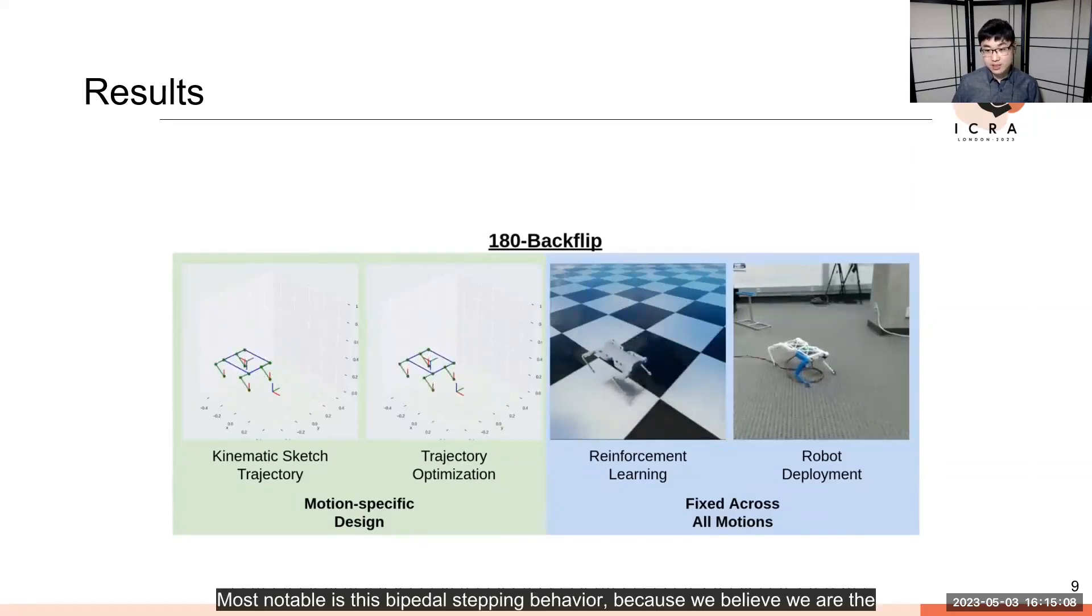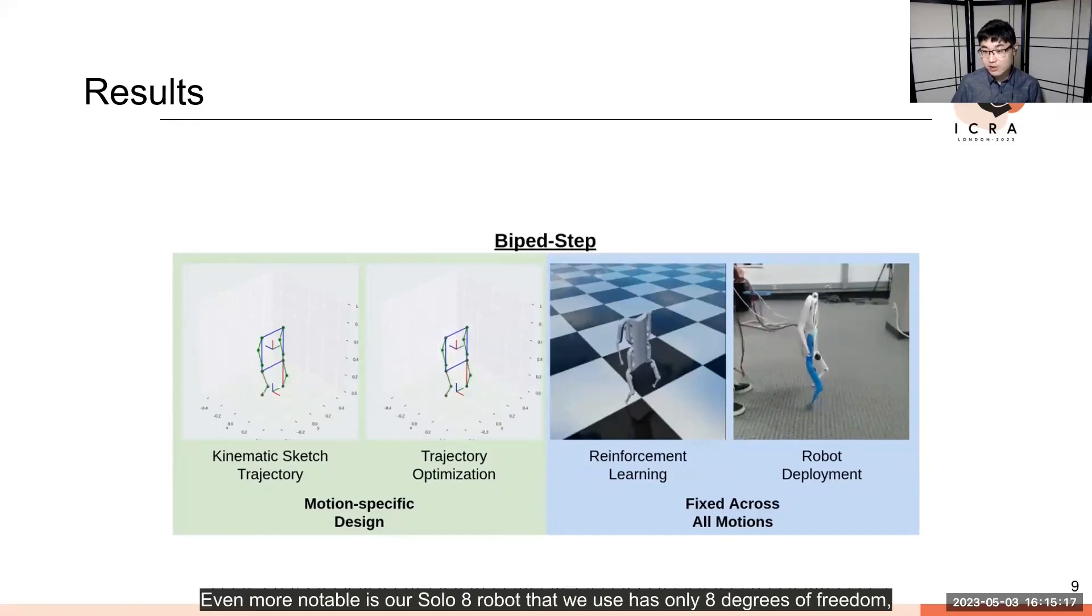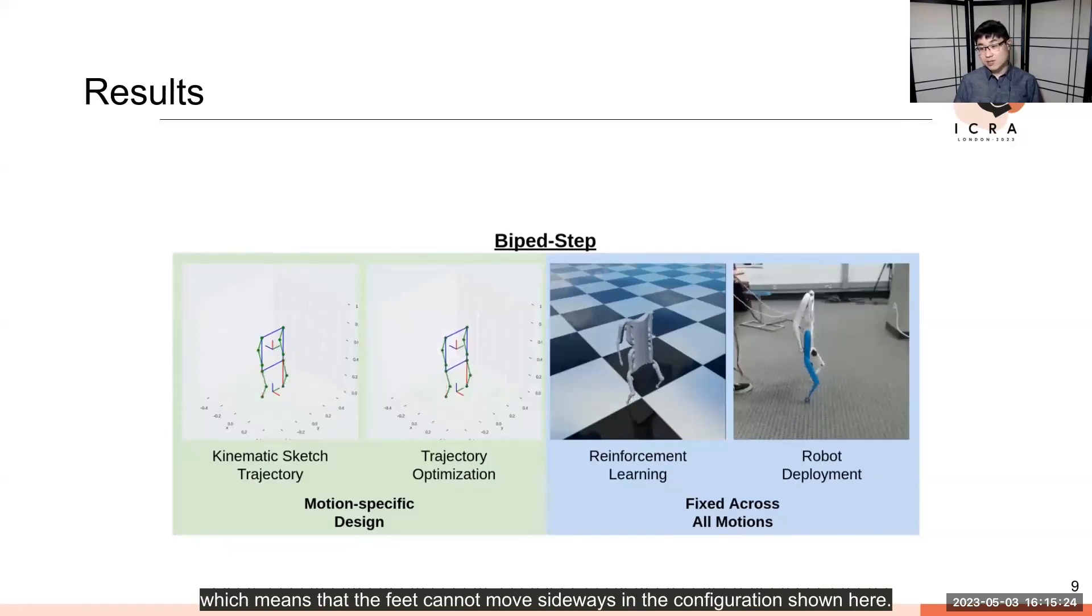Most notable is this bipedal stepping behavior, because we believe we are the first to demonstrate this on a physical quadruped robot with point feet. Even more notable is that our Solo 8 robot has only eight degrees of freedom, which means that the feet cannot move sideways in the configuration shown here.